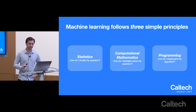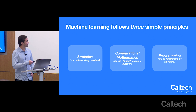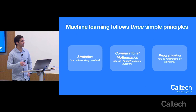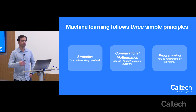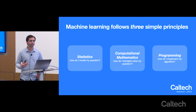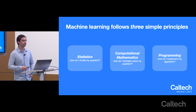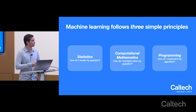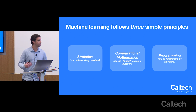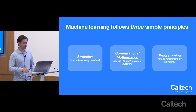Machine learning follows three simple principles, to be a bit over-reductive. The first is statistics: how do I model my question? The second is computational mathematics or numerical analysis: how do we find efficient algorithms for modeling and solving questions formulated through statistics? And the third is programming: how do we implement these algorithms given by numerical analysis?